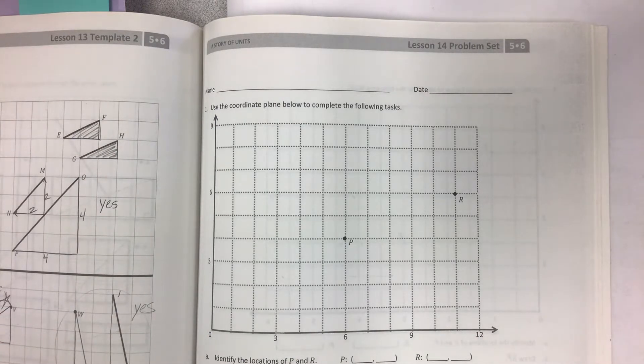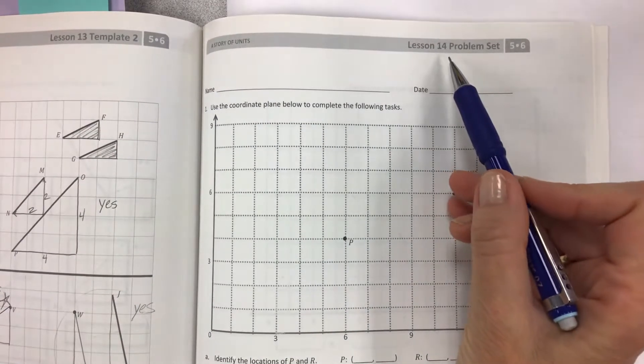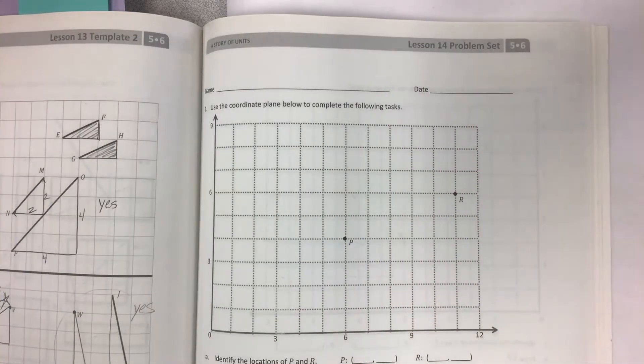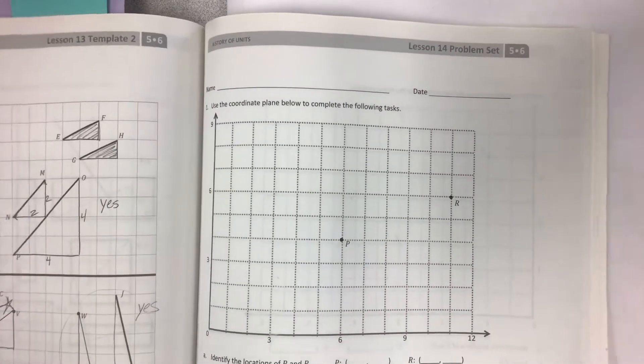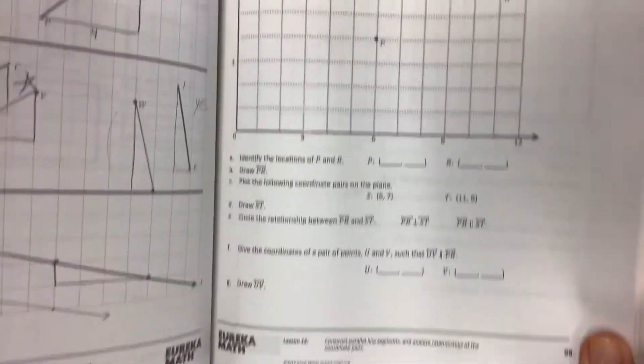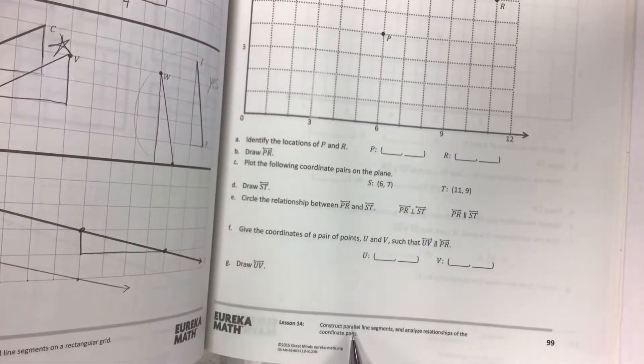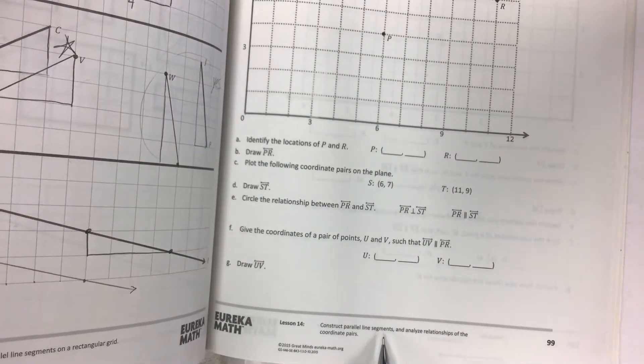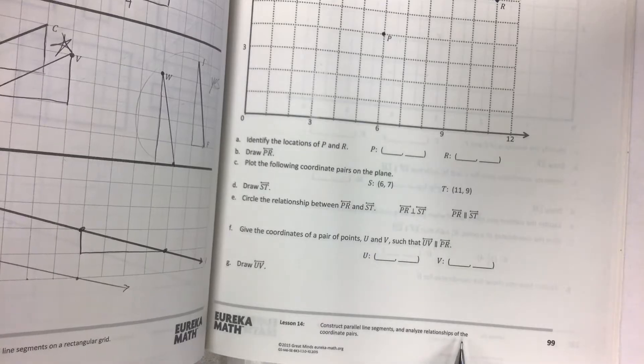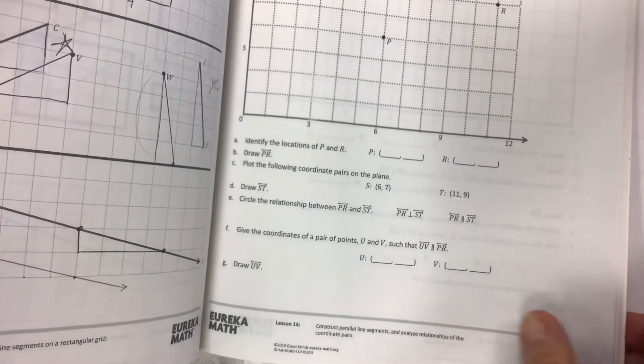Hey there kids! We are doing lesson 14 today in module 6 and we're still working with the coordinate grid. Our objective today is to construct parallel line segments and analyze relationships of the coordinate pairs.